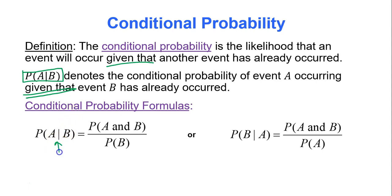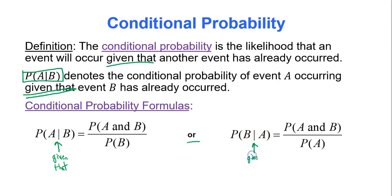The formal formula for the probability of A occurring given that event B has occurred is the probability of A and B occurring divided by the probability of B. The other formula is the probability of event B occurring given that event A has occurred, which is the probability of A and B occurring divided by the probability of A.